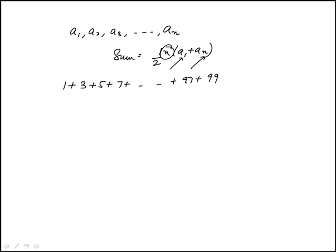So we know these two: the first term is 1, last term is 99. I just need to count the number of terms.